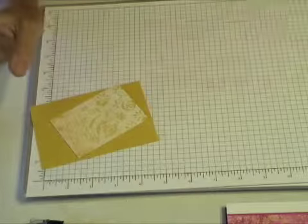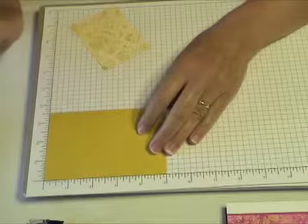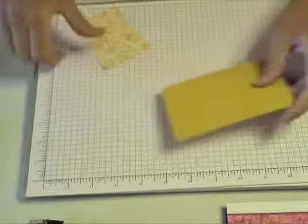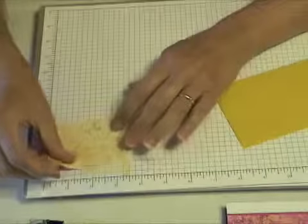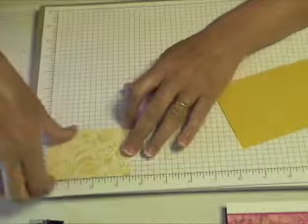Now for the butterfly, I'm going to use some Crushed Curry, approximately 3 1/2 by 5 inch scrap. Then, for the inside of the butterfly, I'm going to use some more of the Designer Series Razzleberry Lemonade, just 2 1/2 by 3 1/2.